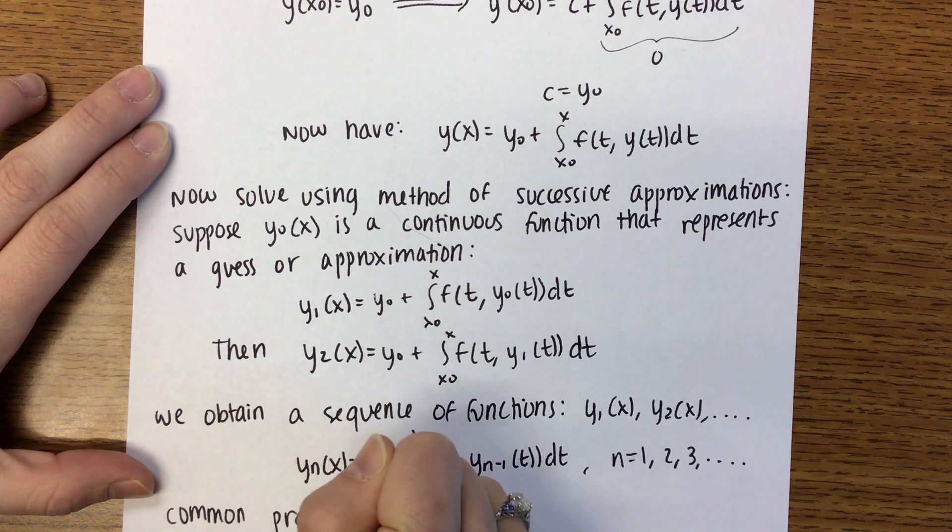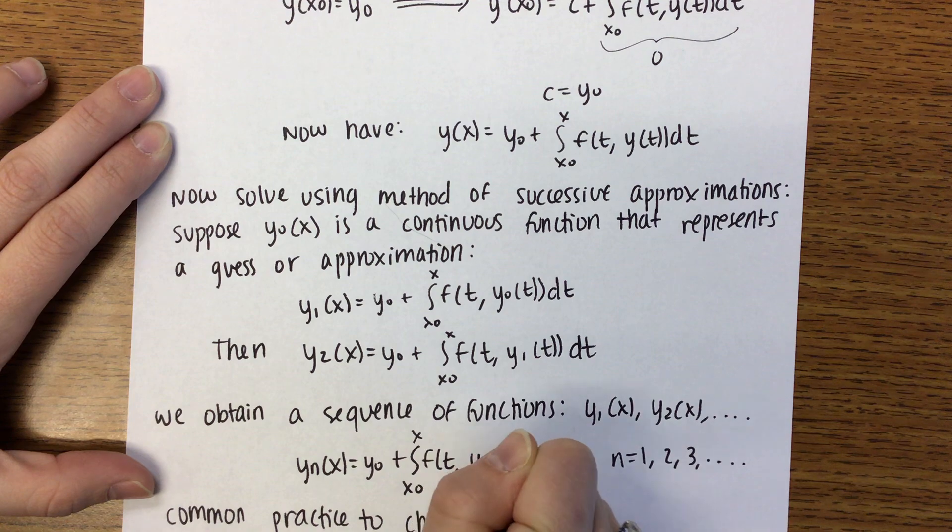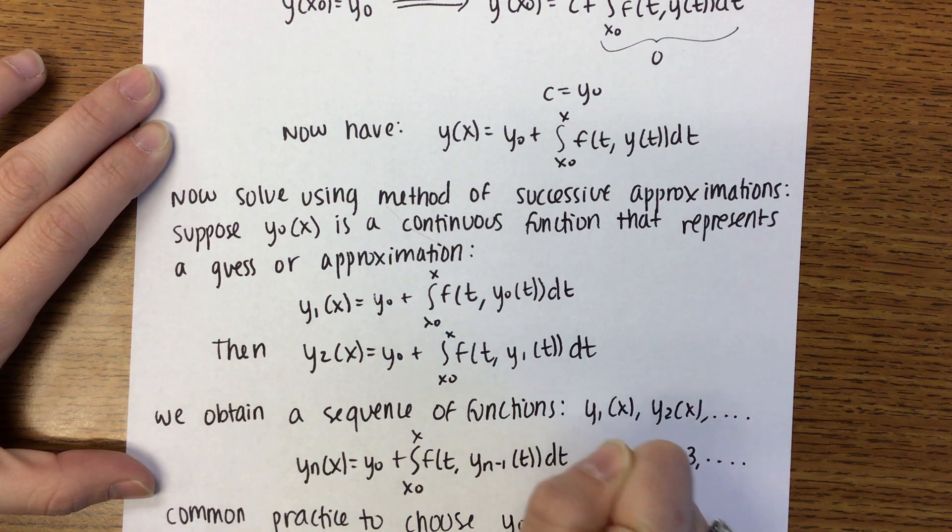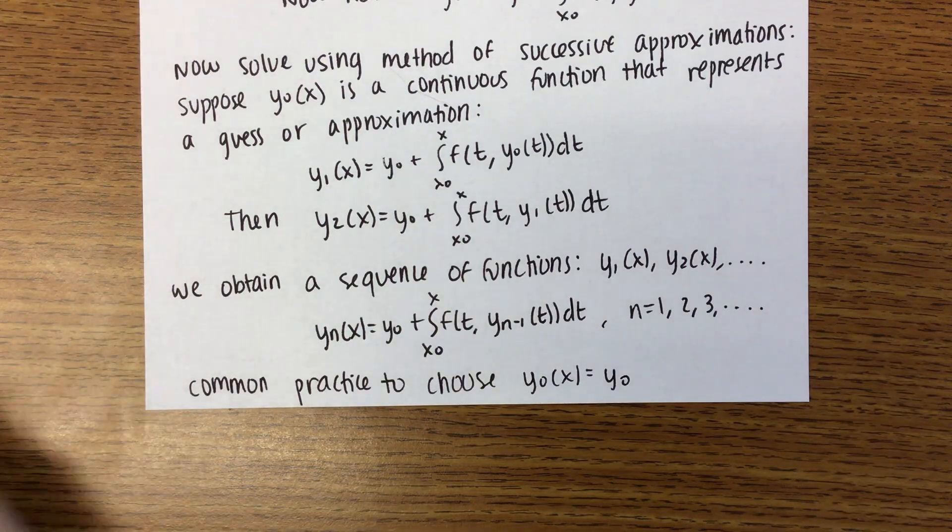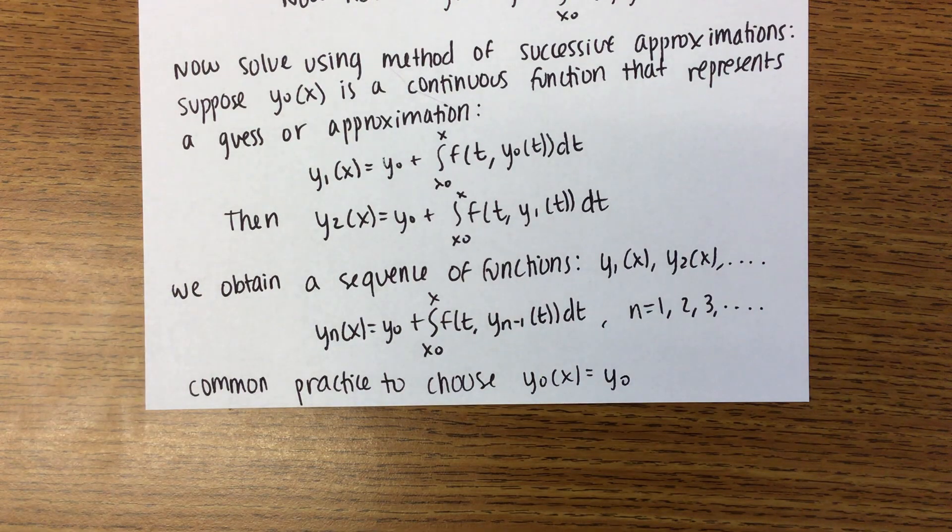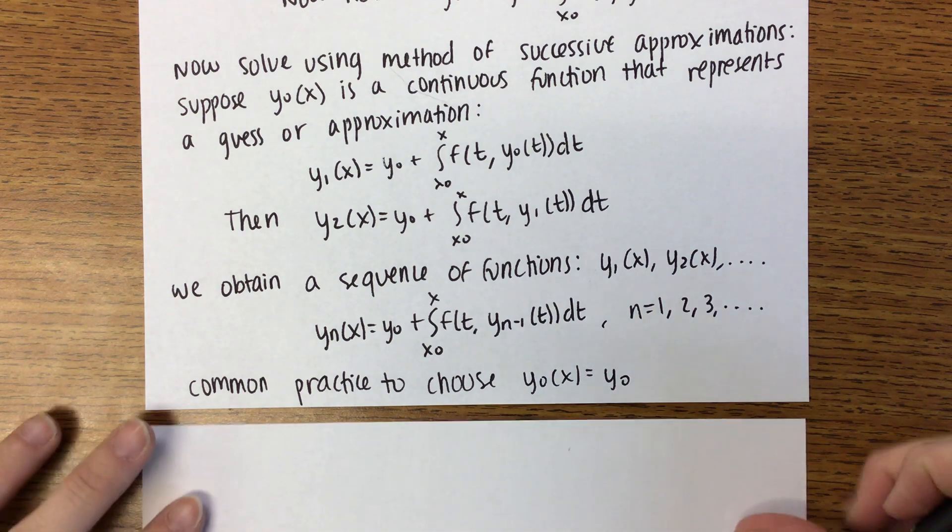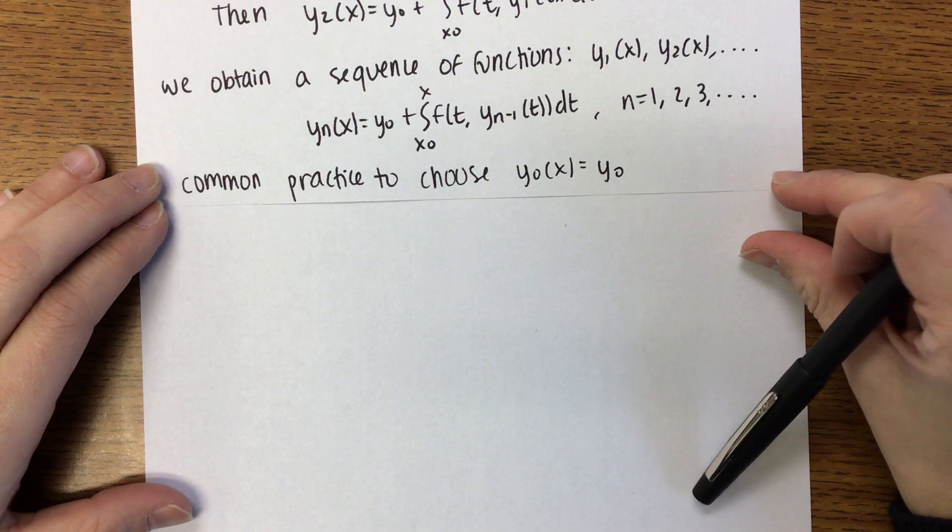So you get all these functions and they'll get you closer and closer to the actual solution. And right now it seems kind of random, but we are able to find a solution oftentimes this way. It all depends on this Y0, X0, and Y0 of T. So our common practice, what's normally done, is to choose Y0 of X to be equal to Y0.